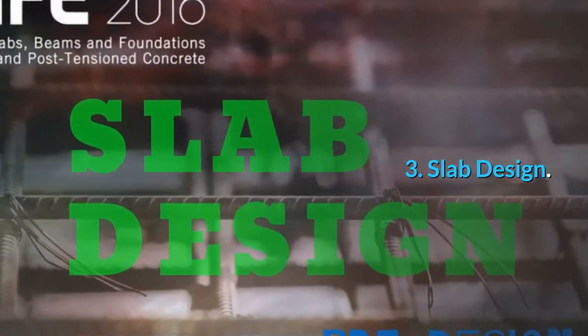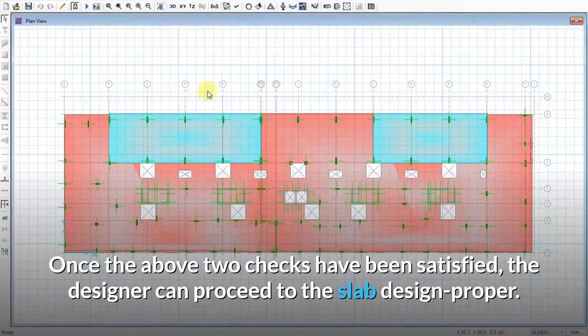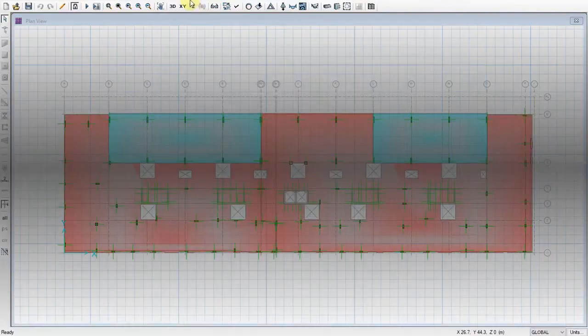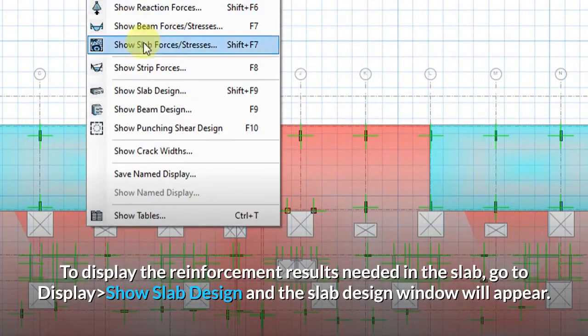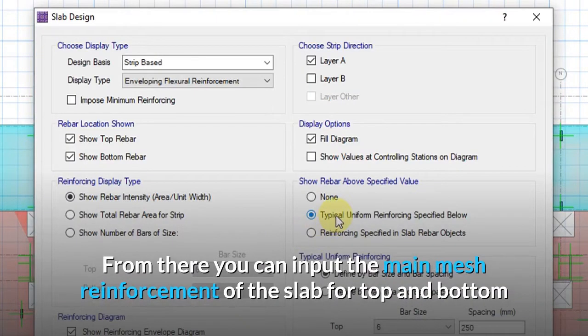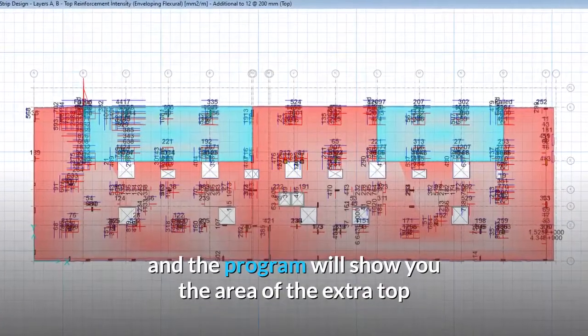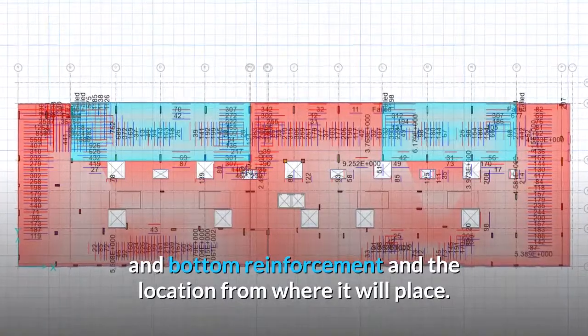Third, slab design. Once the above two checks have been satisfied, the designer can proceed to the slab design proper. To display the reinforcement results needed in the slab, go to display, show slab design and the slab design window will appear. From there you can input the main mesh reinforcement of the slab for top and bottom and the program will show you the area of the extra top and bottom reinforcement and the location from where it will place.